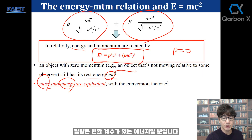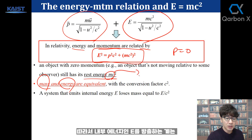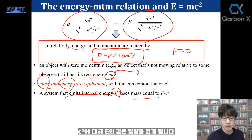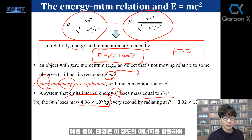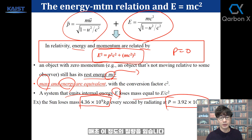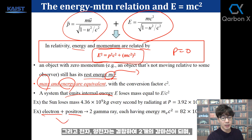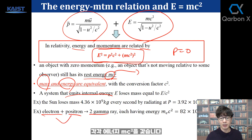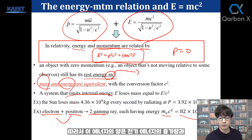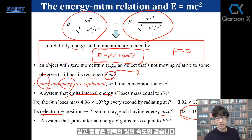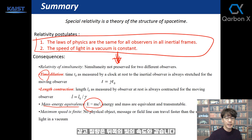Mass is nothing but energy with a conversion factor. A system that emits internal energy E loses mass equal to E over c squared. For example, the Sun loses this amount of mass every second by radiating energy. When an electron and positron combine, they become two gamma rays, each having energy mc squared. The mass becomes zero — a gamma ray photon has zero mass — so this amount of energy is created. A system that gains total energy gains mass equal to that energy divided by c squared.